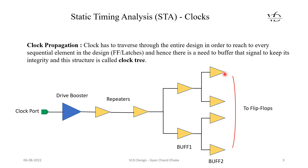This kind of structure — with the drive boosters, repeaters, and buffers — is called a clock tree. Why do we need this clock tree? If the clock signal directly connects to each and every flip-flop, due to the interconnect delays the rise time and fall times of the clock signal will increase. In order to maintain the clock signal integrity and keep it close to its ideal form, we need to insert these buffers to increase the drive strength. This kind of structure is called a clock tree.